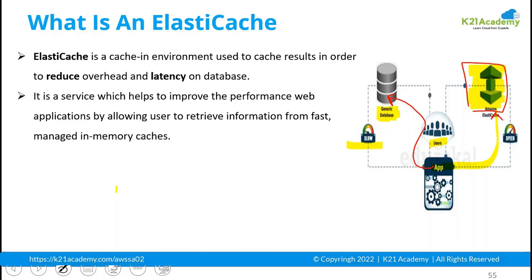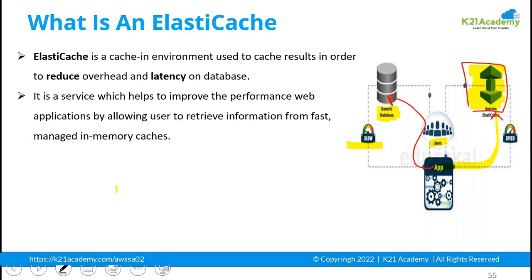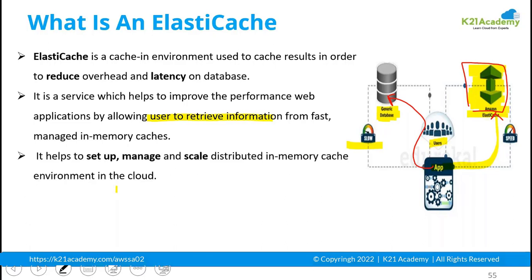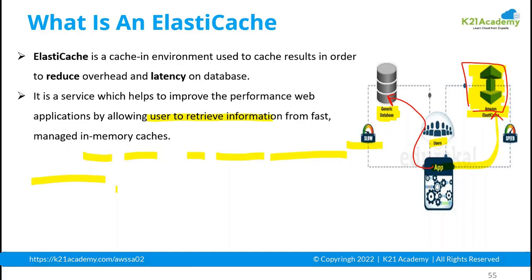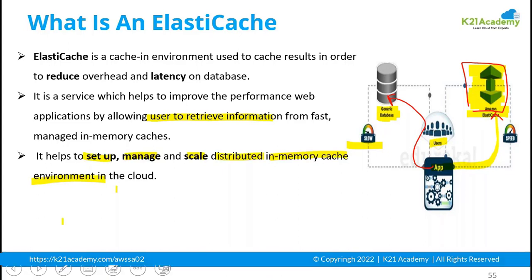When creating an ElastiCache environment in the cloud, it helps you improve the performance of your web application because users will be able to retrieve information from a faster source. Amazon ElastiCache helps you set up, manage, and scale a distributed in-memory cache environment in the cloud.